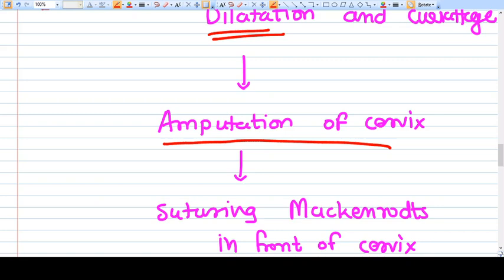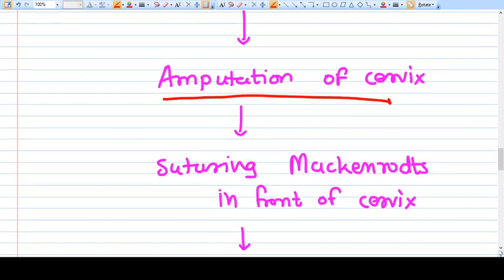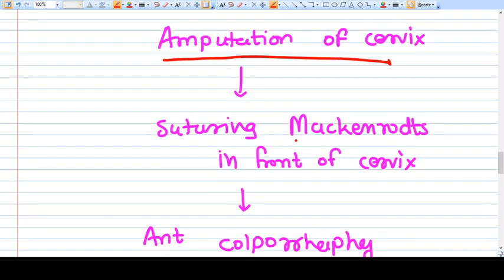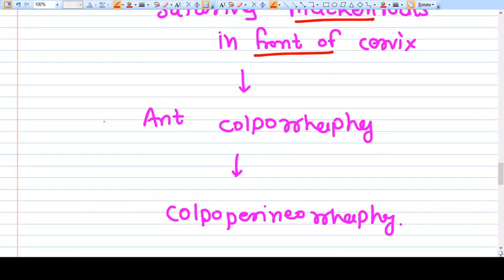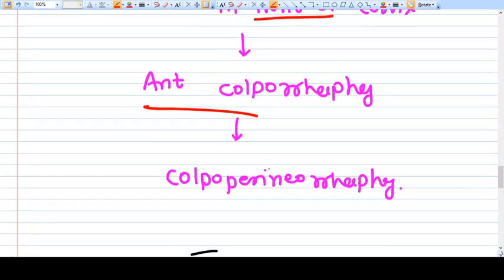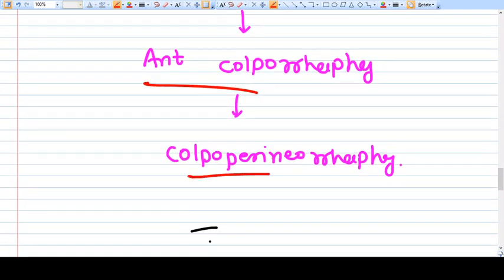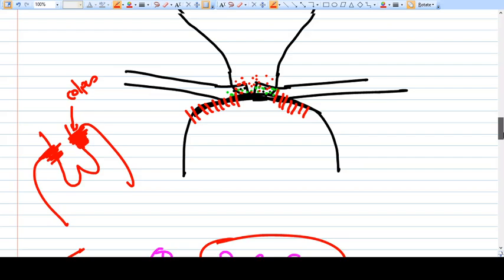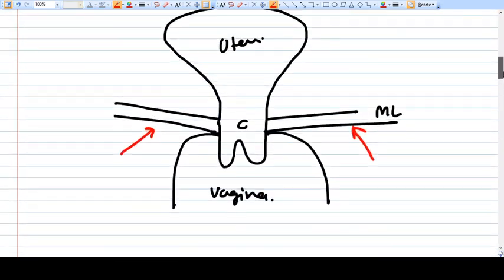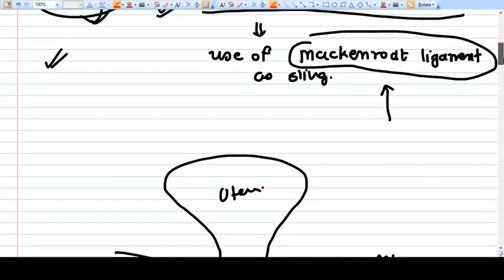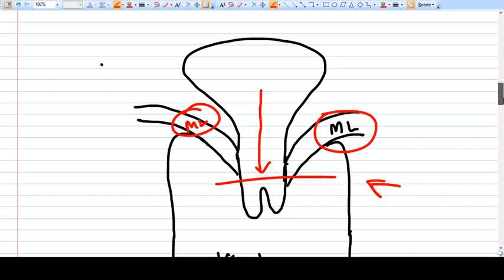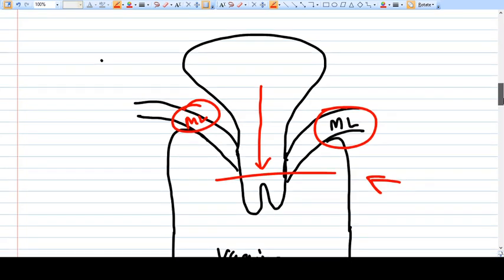We do an amputation of the cervix. What we do is suturing of the mackenrodt ligament in front of the cervix. Then again we just correct the colpus: anterior colporrhaphy, posterior colporrhaphy or colpoperineorrhaphy. The actual steps of the surgery are somewhat complicated, so at this point of time you only need to understand the very basic concept behind this Manchester operation.